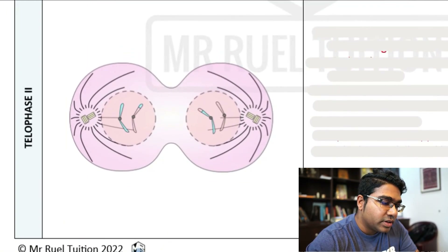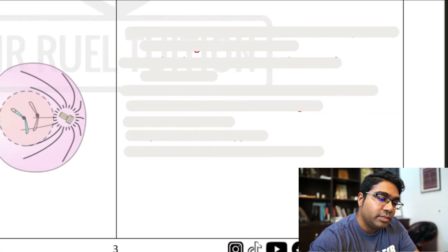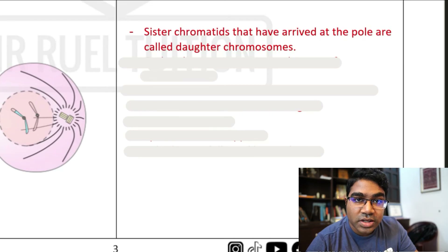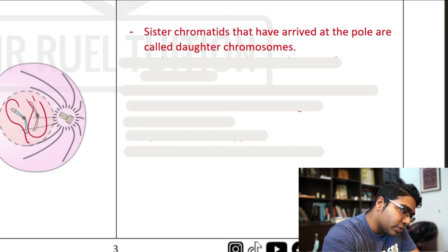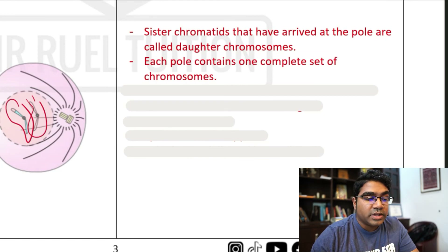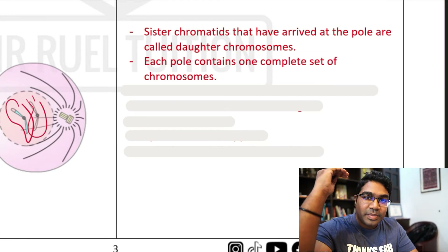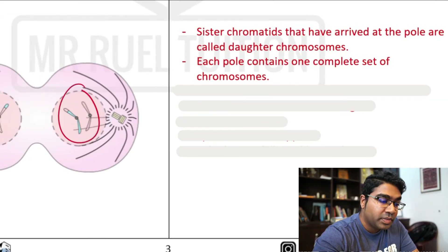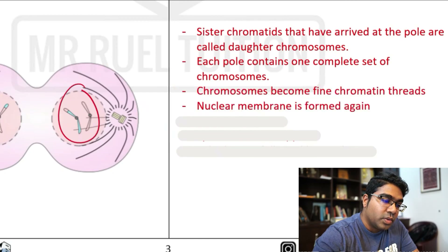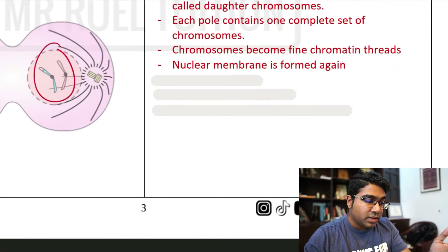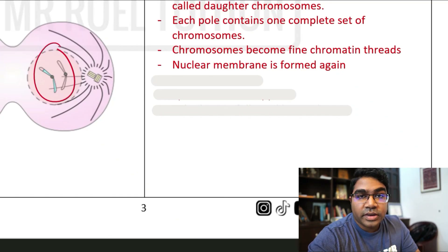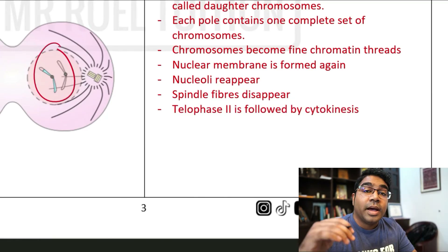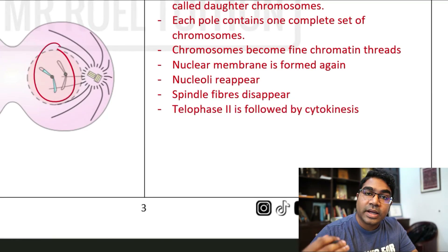Then we go on to telophase 2. In telophase 2, the sister chromatids arrive and are now called daughter chromosomes. Each pole now contains one complete set of chromosomes — we started with two chromosomes and end with two chromosomes as well. The chromosomes become fine chromatin threads and unravel. The nuclear membrane is formed again, nucleoli reappear, spindle fibers disappear, and telophase 2 is followed by cytokinesis.